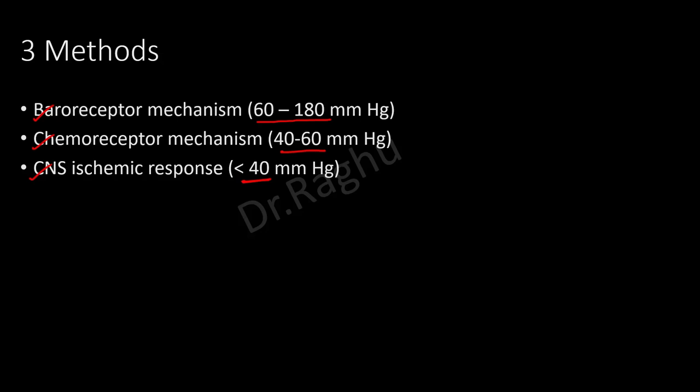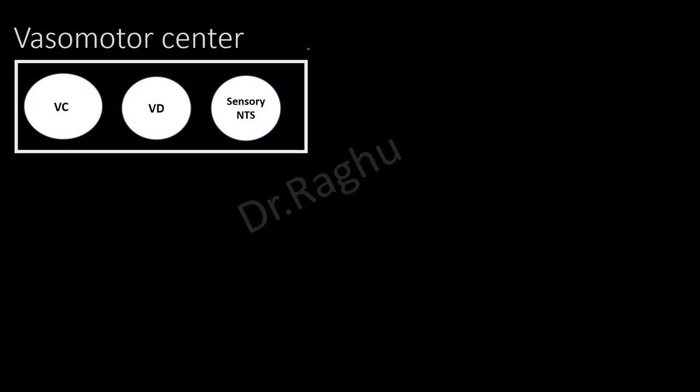To understand these reflexes, we need an idea about the cardiovascular regulatory areas present in the brainstem. There are two schools of thought. The first, from Guyton, states that there is a vasomotor center located in the medulla oblongata. This vasomotor center has three areas: the vasoconstrictor area, the vasodilator area, and a sensory area located in the nucleus tractus solitarius.